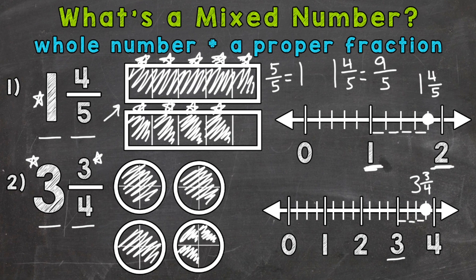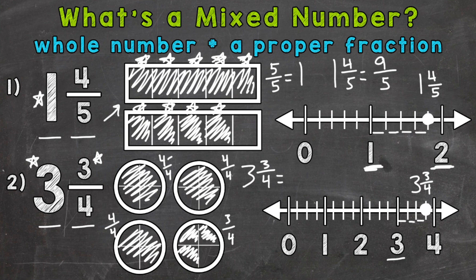Three and three fourths represents a value in between the two whole numbers three and four. As an improper fraction, three and three fourths equals fifteen fourths. Looking at the model: we have four fourths in each whole circle, so four, eight, twelve from the three wholes, plus three fourths gives us fifteen fourths filled in. Those are equivalent — mixed number three and three fourths equals fifteen fourths, just two different ways to represent the same value.